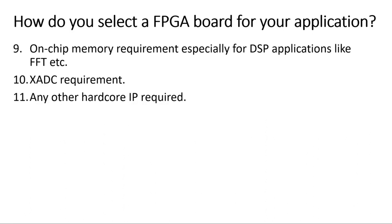The eleventh point is any other hard-coded IP requirement. These days FPGAs are not just programmable fabric — inside the FPGA chips there are many hard-coded IPs, for example PCI blocks, Ethernet IPs, DSP IPs, and many more. While choosing an FPGA board you must check what IPs and which types are hard-coded inside the device and choose accordingly. Hard-coded IPs are typically those that require very high performance and would be difficult or area-intensive to implement in programmable fabric.